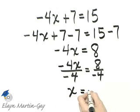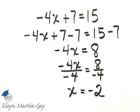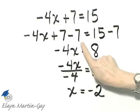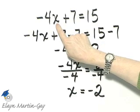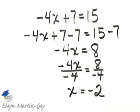The right side, 8 divided by negative 4 is negative 2. I'll let you check and see that negative 2 is the solution by replacing x with negative 2 in the original equation and seeing that a true statement occurs.